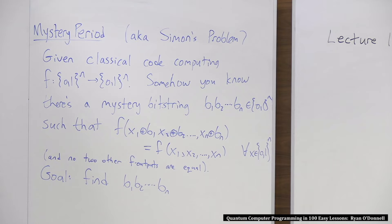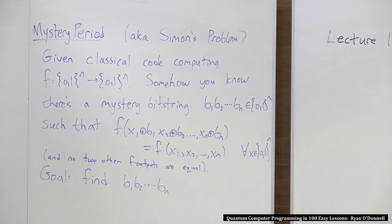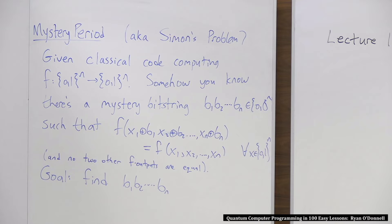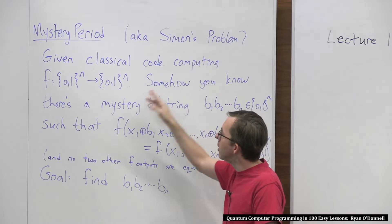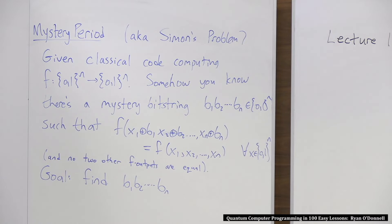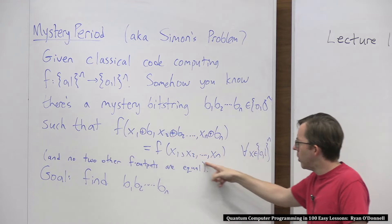Simon set out to prove that quantum stuff is not really good for anything — that whenever you have a quantum algorithm you can have a classical algorithm that's more or less as efficient. He worked on it and couldn't do it. Eventually he boiled it down to a problem where he had a super-efficient quantum algorithm but the best classical algorithm he could think of was exponential time. He called it — well, everybody calls it Simon's problem, or maybe we could call it mystery period. It's a bizarre, contrived problem that would never arise in real life.